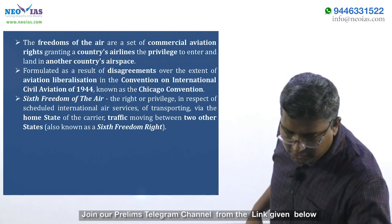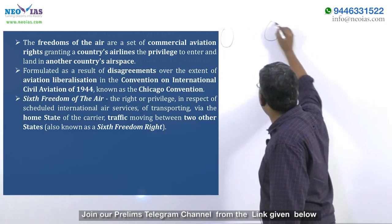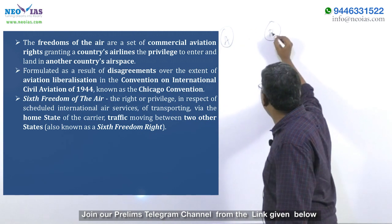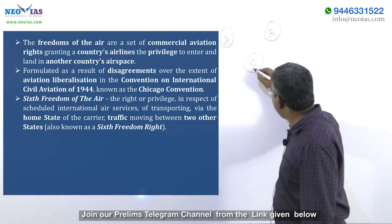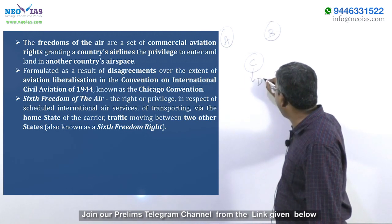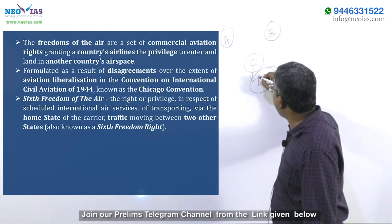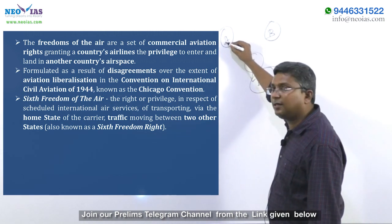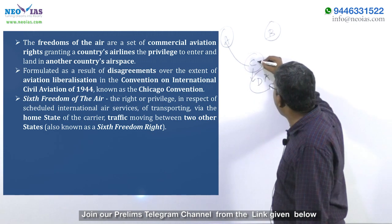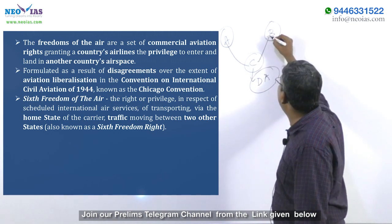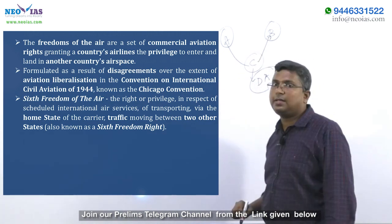The sixth freedom means: take the case of countries A, B, and C. Country C has a domestic airline. That domestic airline has the right to take passengers from country A, land in its own country C, and then take those passengers on to country B. This right is what is called sixth freedom.